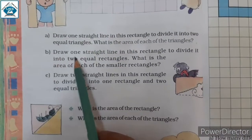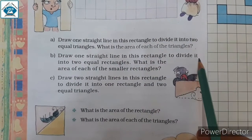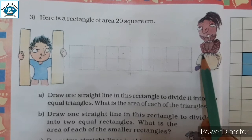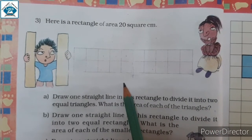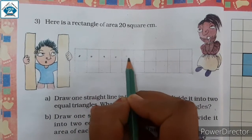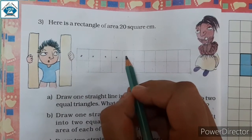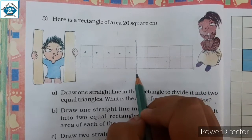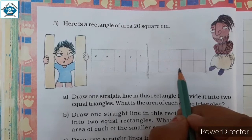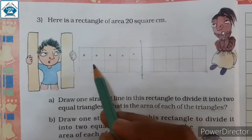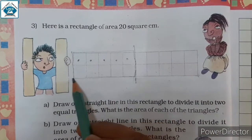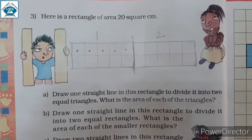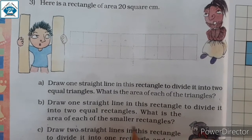Now, B. Draw one straight line in this rectangle to divide it into two equal rectangles. The length is 10 centimeter, so you have to choose a point at 5 centimeter — 1, 2, 3, 4 and 5 — and here you can draw a straight line. Here you have a smaller rectangle.